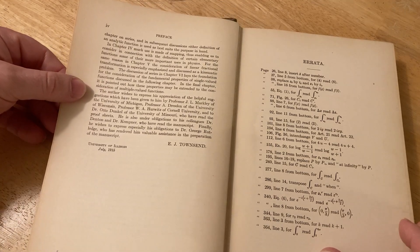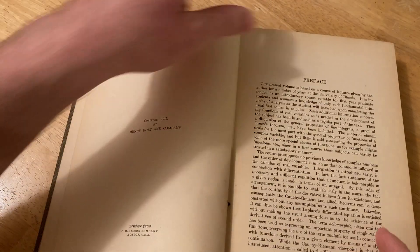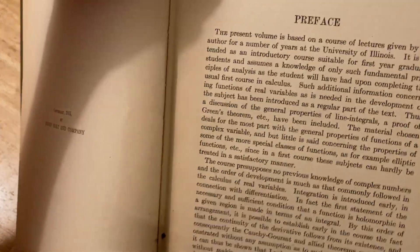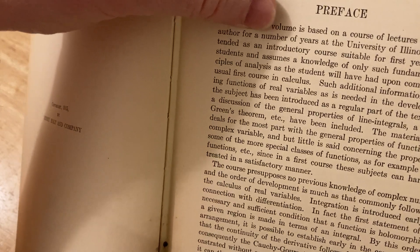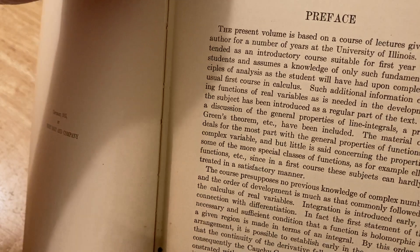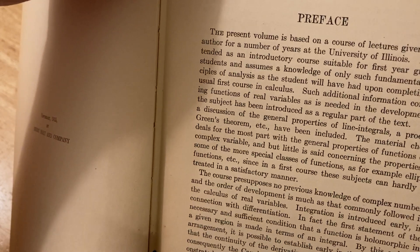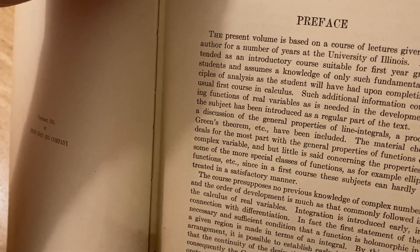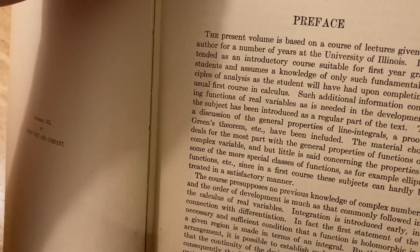There's some errata. And here he talks about who the book is for. I want to emphasize this because it's really important to look at this. The present volume is based on a course of lectures given by the author for a number of years at the University of Illinois. It is intended as an introductory course suitable for first-year graduate students.